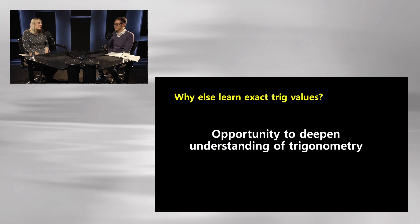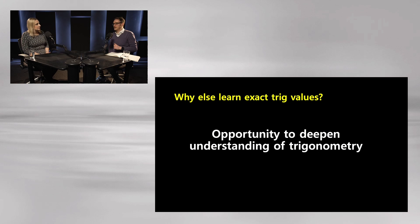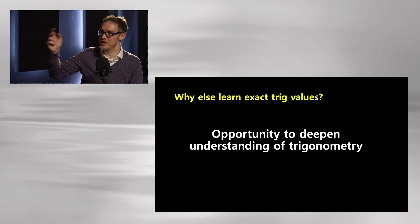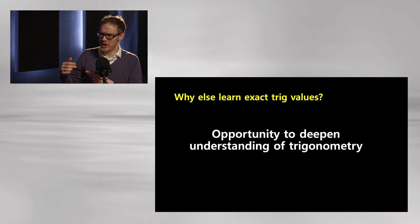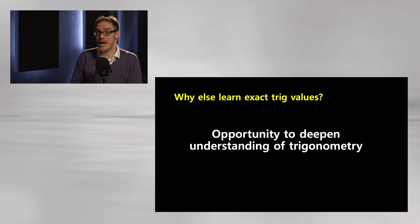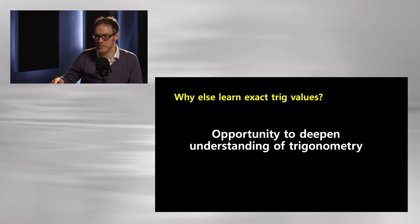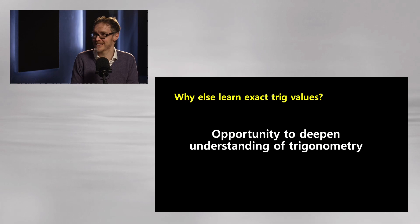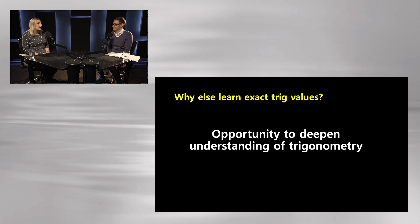Knowing sin 30 is a half is useful and interesting when you look at triangles with the same ratio between sides. And knowing exact values is quite useful for graphs — key points on trig graphs — though that would only be higher tier. But it feels like foundation isn't the place for this. Looking at higher tier, I can't really see a strong argument for having them there either, given students aren't answering questions like that A-level one where you actually need them.